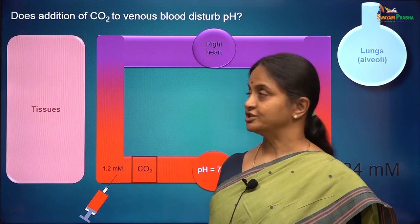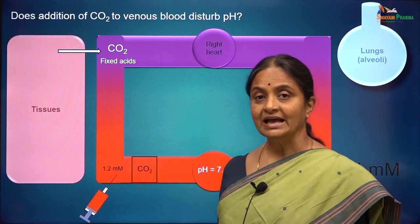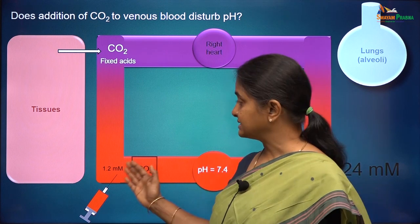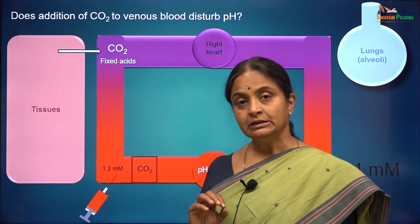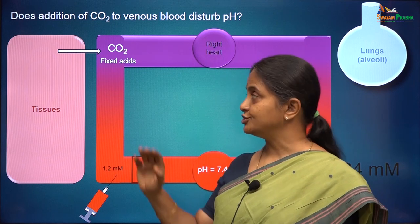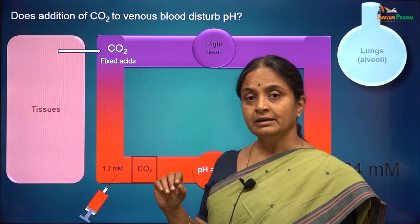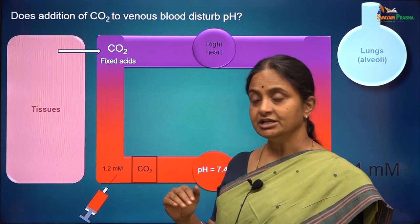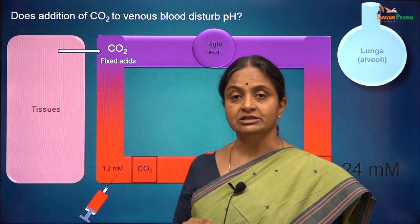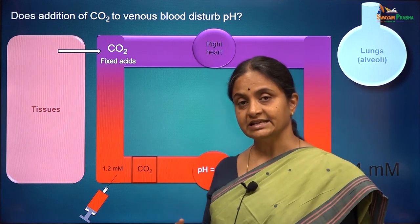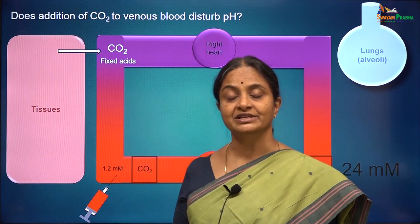In this session we will take up the question: what happens with addition of acids to blood as it goes through tissues? The major output from tissues into venous blood is carbon dioxide. We will consider issues that arise due to addition of carbon dioxide to venous blood, and in the next session we will consider what happens due to addition of fixed acids.